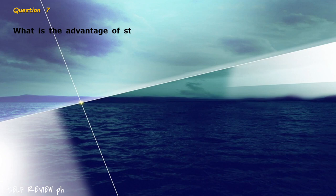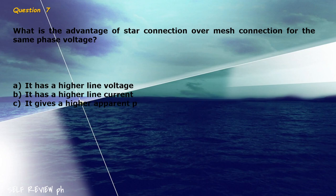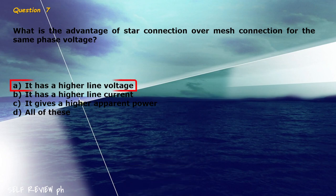Question 7: What is the advantage of star connection over mesh connection for the same phase voltage? A) it has a higher line voltage, B) it has a higher line current, C) it gives a higher apparent power, D) all of these. The correct answer is letter A, it has a higher line voltage.